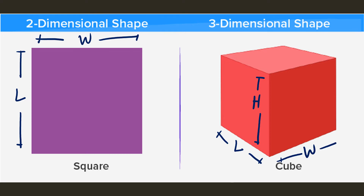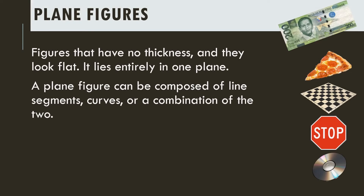Solid figures are three-dimensional figures. A plane figure has no thickness and lies entirely in one plane. A plane figure can be composed of line segments, curves, or a combination of the two.